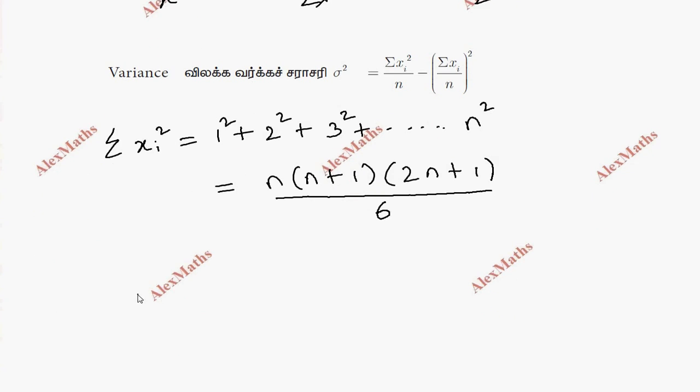This is the variance here, so variance is sigma square. In the numerator, this formula is n into n plus 1 into 2n plus 1 whole divided by 6n.